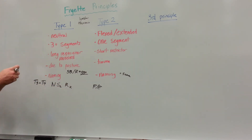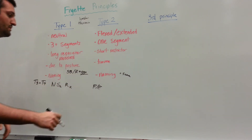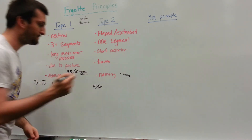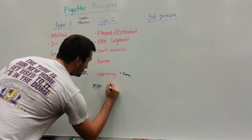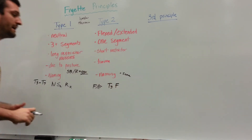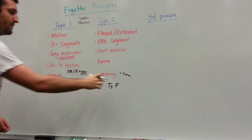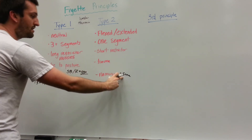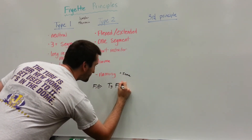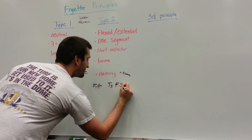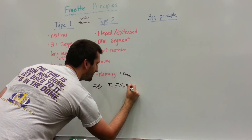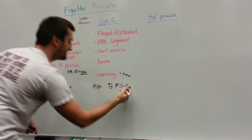Now let's go through a mock type 2 example. Let's say T3 is flexed. We know that side bending and rotation are in the same direction for type 2. So, for example: T3 is flexed, side bend right, rotated right — same direction.